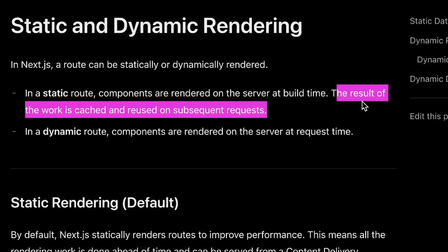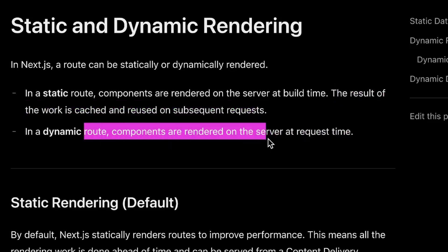With a dynamic route, components are rendered on the server at request time. So every time you make a request to a certain route, your server will render those components at request time and then serve them to your client. So static is rendering things at build time, and dynamic is rendering things at request time.